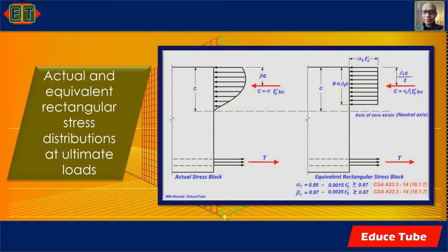Here we can see the actual stress block and the equivalent rectangular stress block. ACI code and CSA A23.3 permit the use of an equivalent rectangular concrete stress distribution for ultimate flexural strength calculation. This rectangular stress block was originally proposed by Whitney, and is therefore called the Whitney stress block.